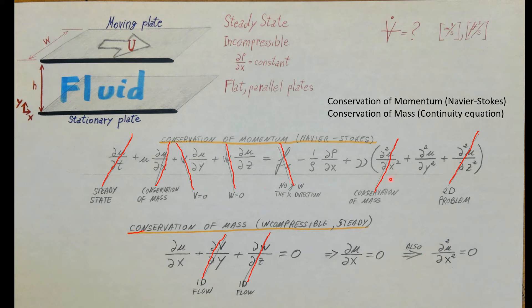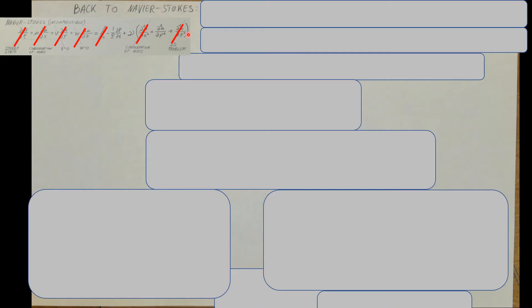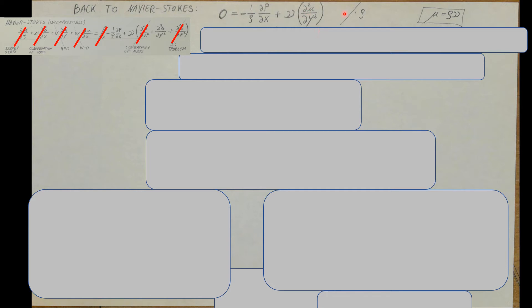Let's clean up the Navier-Stokes equation. On the left-hand side we have zero — we crossed everything out. On the right-hand side we have: negative one over density times the pressure term, plus kinematic viscosity times the second derivative of U with respect to y. I like to change kinematic viscosity into dynamic viscosity, so we multiply the whole equation by density.